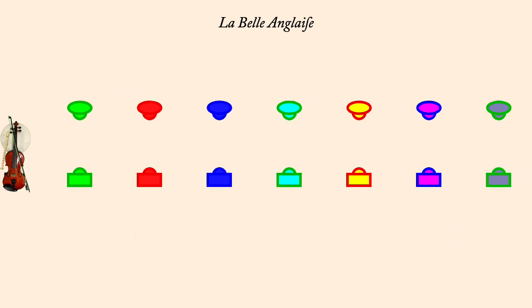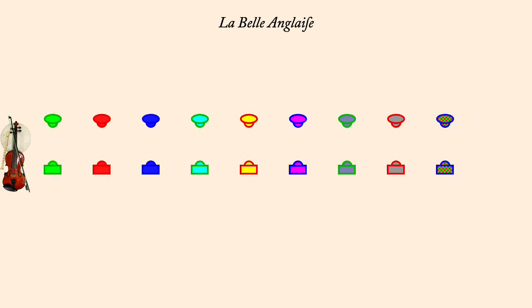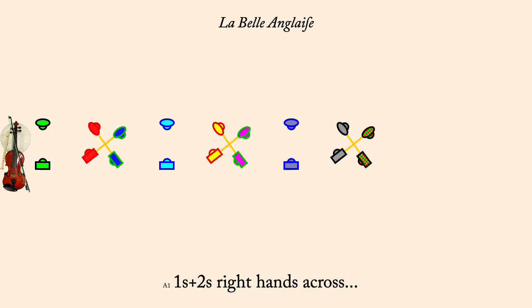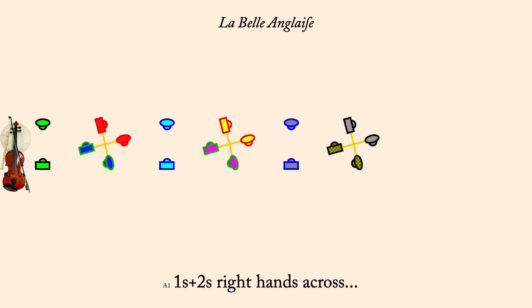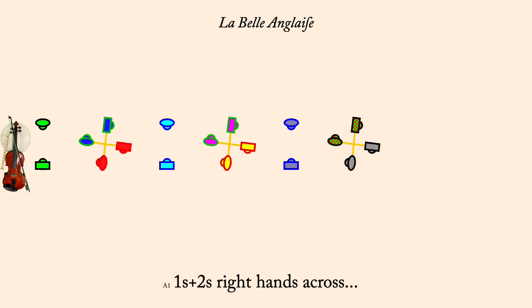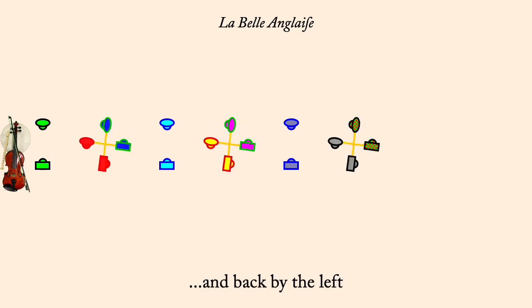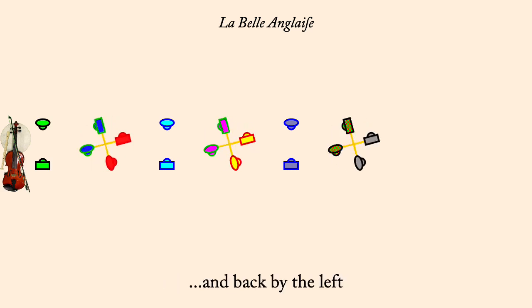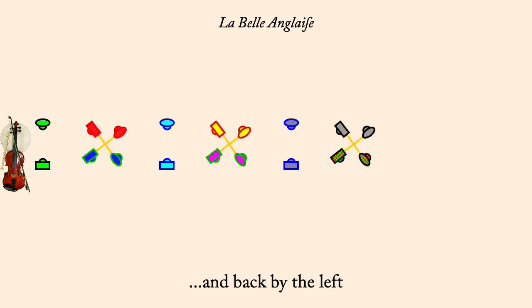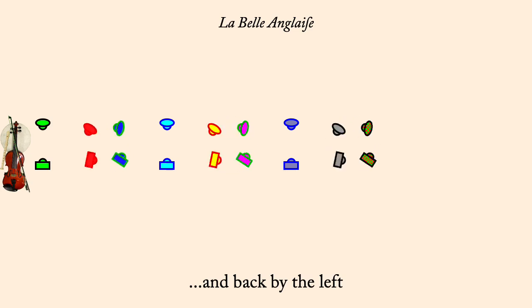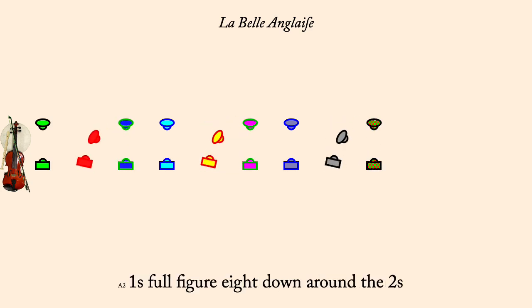Ones and twos, right hands across. And back by the left. Ones full figure eight down through twos.